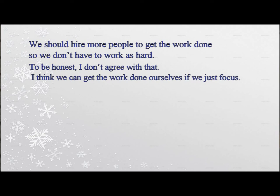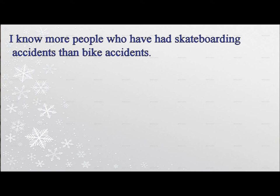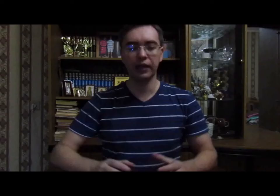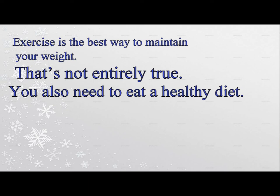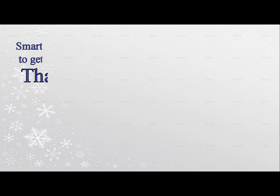Examples of 'To be honest, I don't agree with that': 'We should hire more people to get the work done so we don't have to work as hard.' 'To be honest, I don't agree with that. I think we can get the work done ourselves if we just focus.' 'Skateboarding is a lot safer than riding a bike.' 'To be honest, I don't agree with that. I know more people who have had skateboarding accidents than bike accidents.' 'That's not always true' / 'That's not entirely true' — Examples: 'Exercise is the best way to maintain your weight.' 'That's not entirely true. You also need to eat a healthy diet.' 'Smart people don't need help from anyone to get their work done.' 'That's not always true.' 'As a matter of fact, I don't think that's correct' — this is a more firm but formal way to express your disagreement.